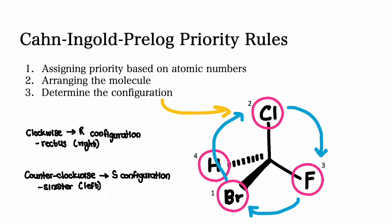The third step is to determine the configuration. Visualize the order of priorities looking from the highest to the lowest priority group. If the order is clockwise, then an R configuration is assigned. R stands for rectus, which is Latin for right. If the priority groups are moving in a counterclockwise direction, then it is assigned an S configuration. S stands for sinister, which is Latin for left.